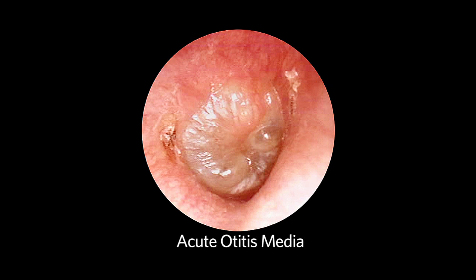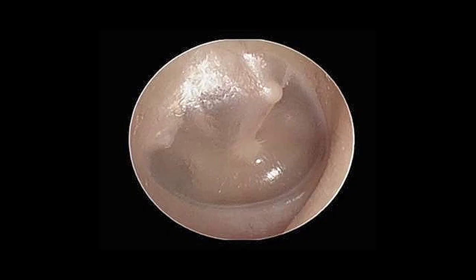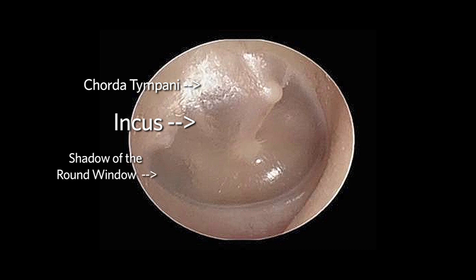In acute otitis media, the tympanic membrane is erythematous and may be bulging. When the tympanic membrane is translucent, one may often view normal structures of the middle ear. Posteriorly and superiorly, part of the incus may be seen, as well as the chorda tympani crossing from posterior to anterior. Posteriorly and inferiorly, one can see the shadow of the round window. Anteriorly and inferiorly, the shadow of the opening of the eustachian tube may be seen.